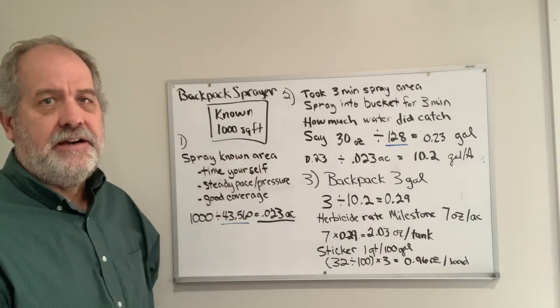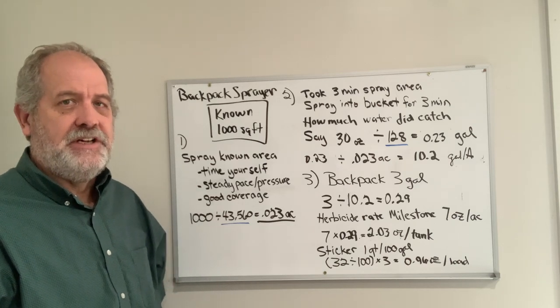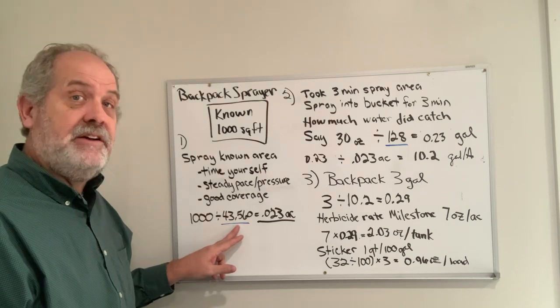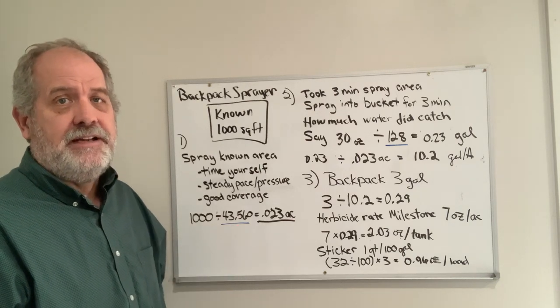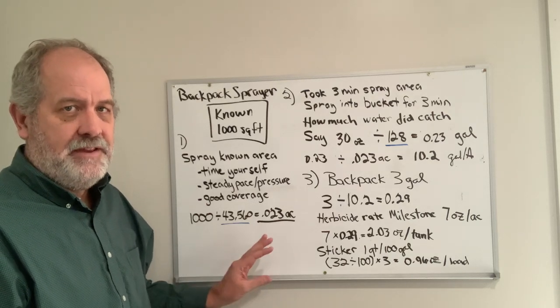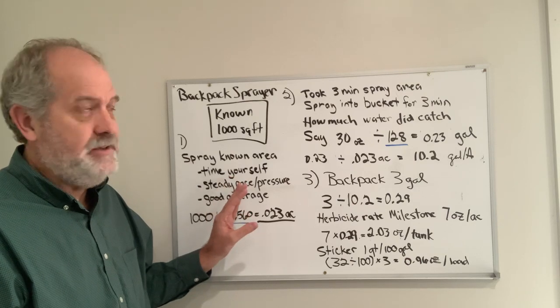We want to take the known area and find out how much of an acre it is. Generally, 1000 square feet divided by 43,560, which is the area in an acre, is 0.023 acres. You'll want to remember that number. So: known area, spray it, time yourself.